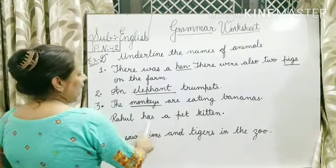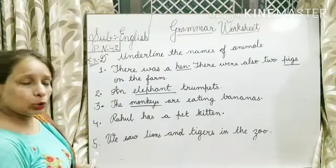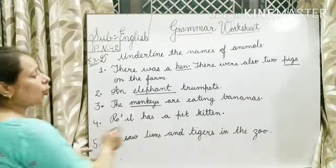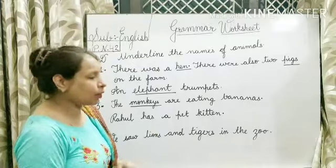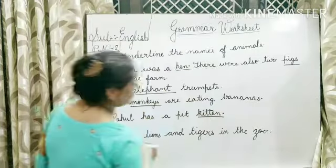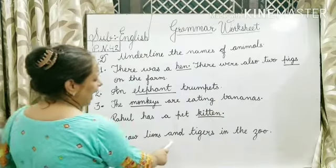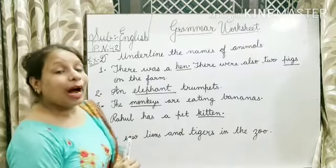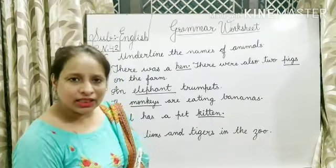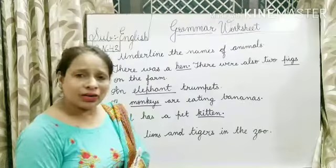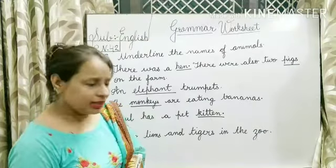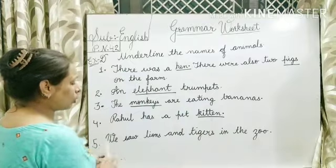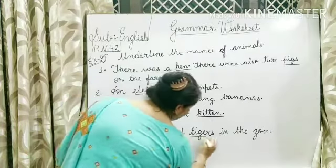Coming to the fourth one: Rahul has a pet kitten. So underline kitten. Now the last one: we saw lions and tigers in the zoo. Lions and tigers are animals found in the zoo. Zoo is a place name. So the animals here are lions and tigers — underline lions and underline tigers.